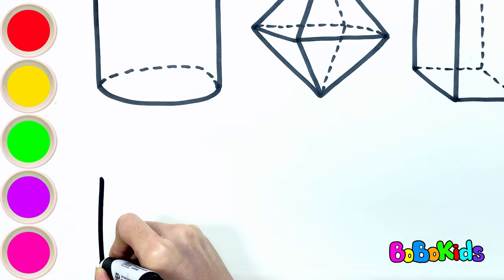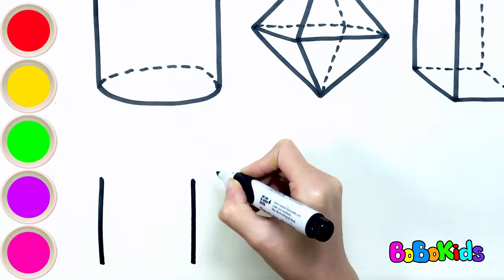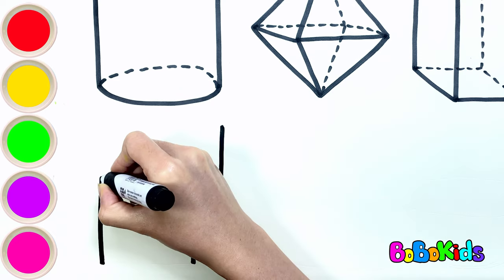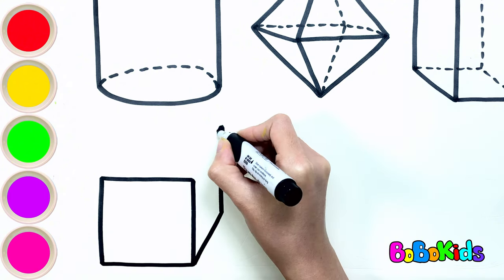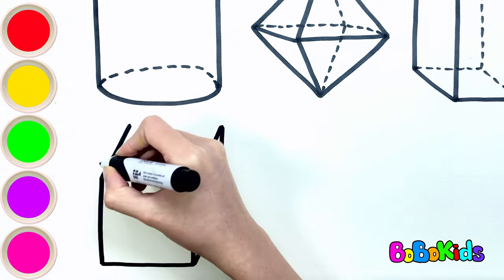Below Bobo will draw a 3D square. Drawing a 3D square is the same as drawing a rectangular box. However, the straight lines of a 3D square are equal.